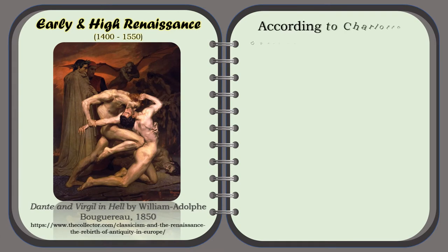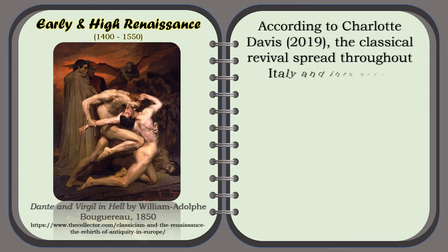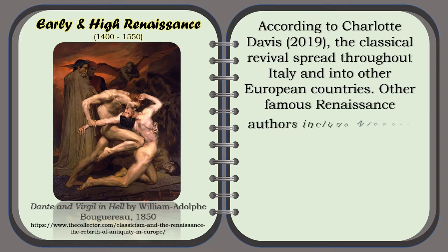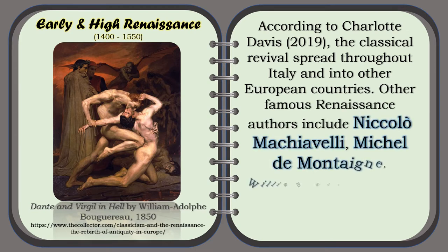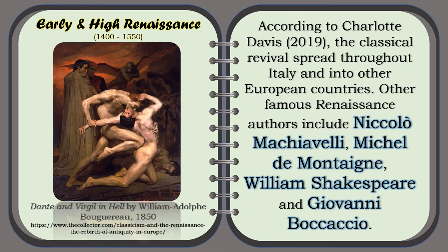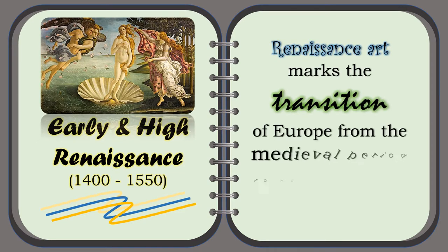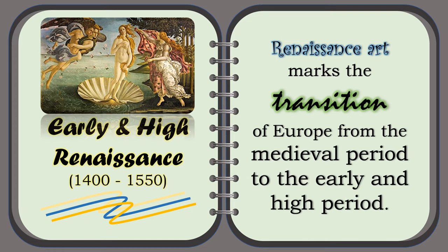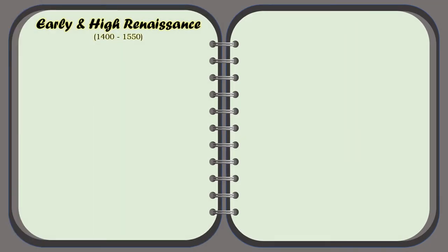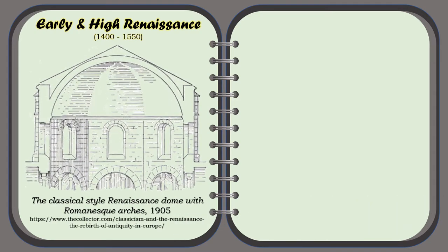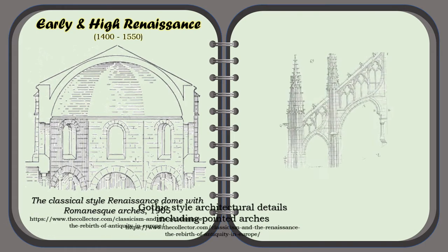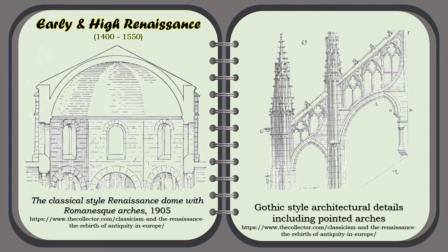According to Charlotte Davis, the classical revival spread throughout Italy and into other European countries. Other famous Renaissance authors include Niccolò Machiavelli, Michel de Montaigne, William Shakespeare, and Giovanni Boccaccio. Renaissance art marks the transition of Europe from the medieval period to the Early and High period. For example, the classical style Renaissance dome with Romanesque arches in 1905, and Gothic style architectural details including pointed arches.